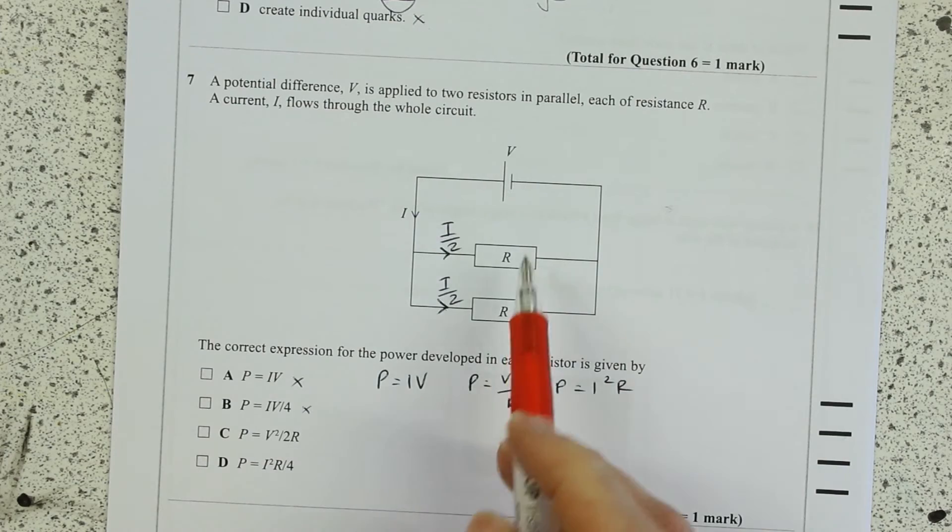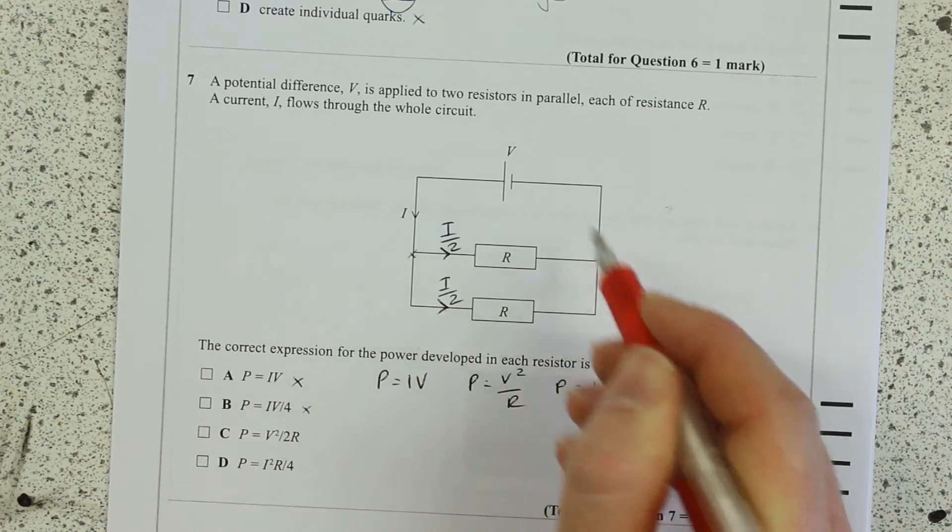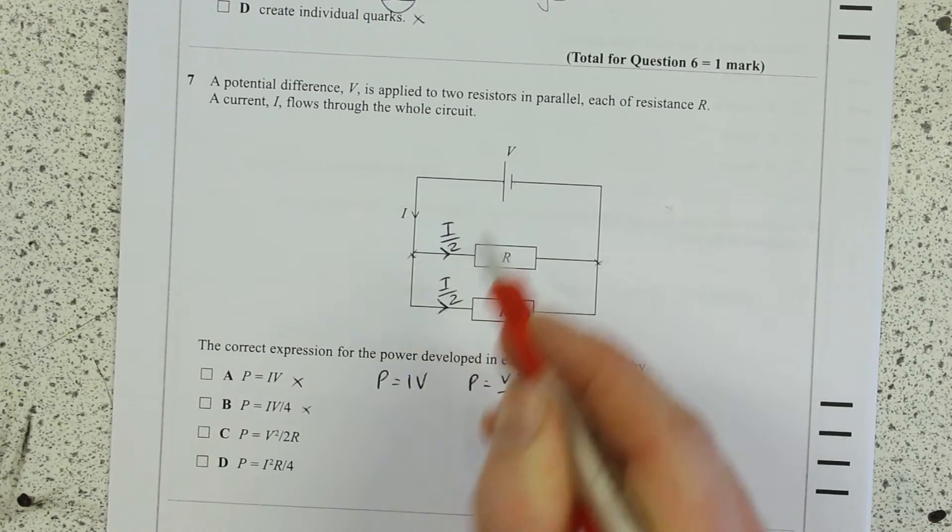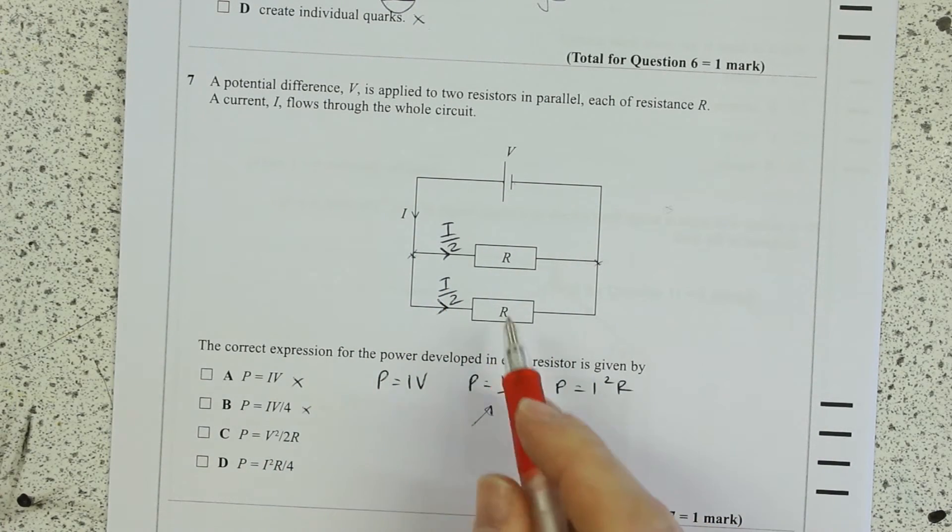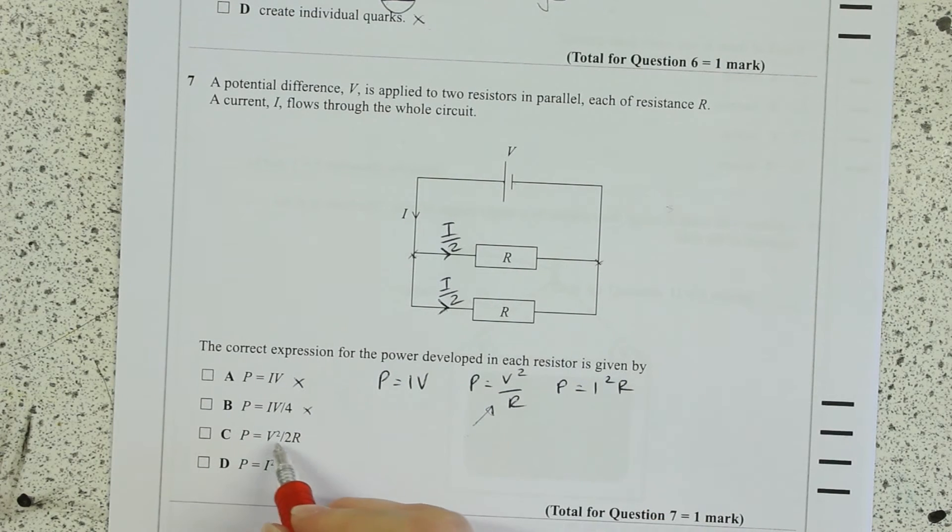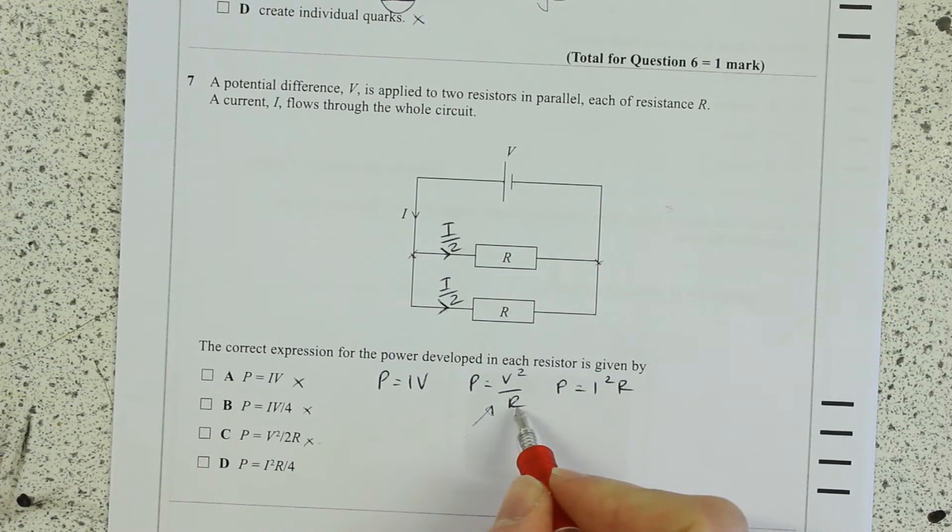Okay well what is the voltage in each branch? Between here and here is the same as here so the voltage in each branch is V. So actually this equation will give you the power in each branch. So it's not V squared over 2R, it's just V squared over R.